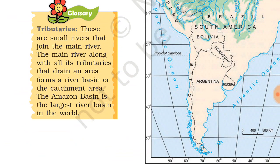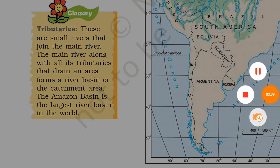Now let's understand what tributaries are. Tributaries are small rivers which join a big river. The main river is a large river, and I am drawing this on a map to give a better way to understand.